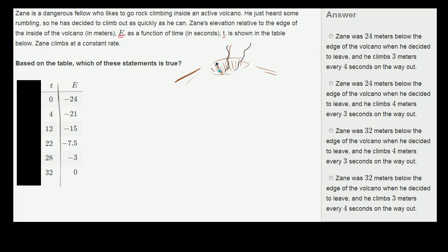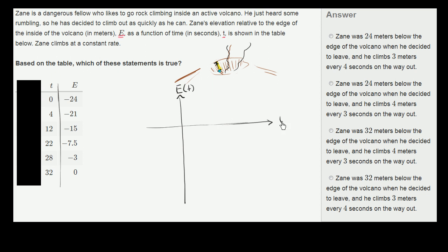So let's think about what's happening. Where does he start? At time equals 0, he is 24 meters below the edge of the volcano. So that distance right over here is 24 meters. We can even plot this on a graph — his elevation relative to the edge as a function of time. It's negative most of this time, so I'm going to place the t-axis a little bit higher. When t is equal to 0, his elevation is negative 24 meters.